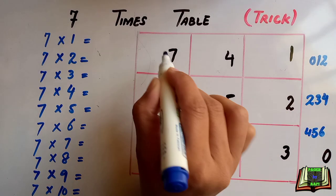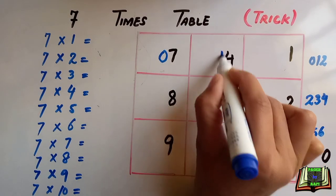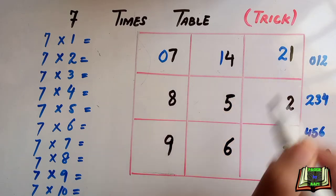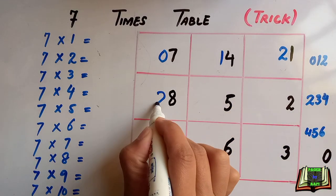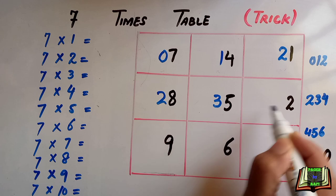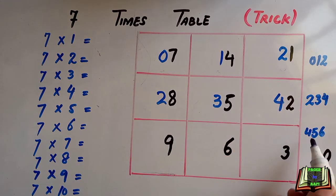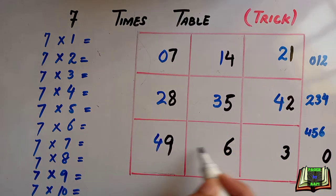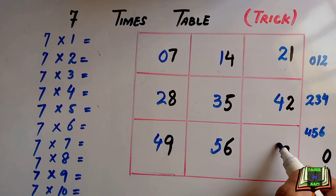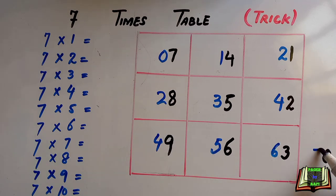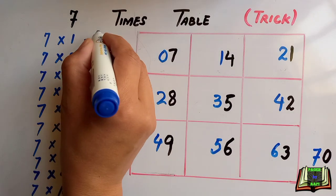So let's see. 0, 1, 2, 2, 3, 4. 2, 3, 4 like this. And in the next row 4, 5, 6. And number 7 with 0. So here is your 7 times table trick.